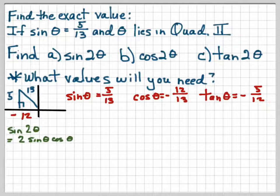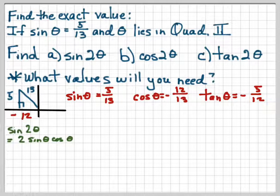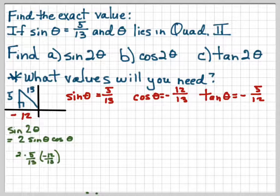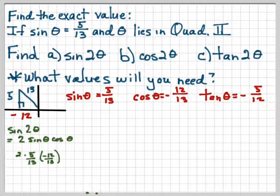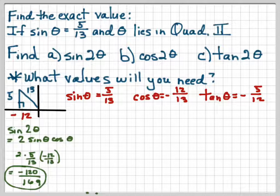Now we want to find sine of 2θ. That equals 2 sine θ cosine θ by our identity. Plugging in: 2 times (5/13) times (−12/13), which gives us −120/169. We can't reduce that, so we leave it.